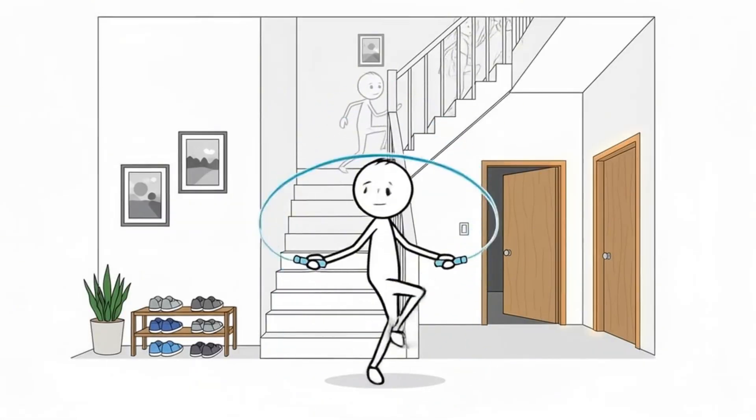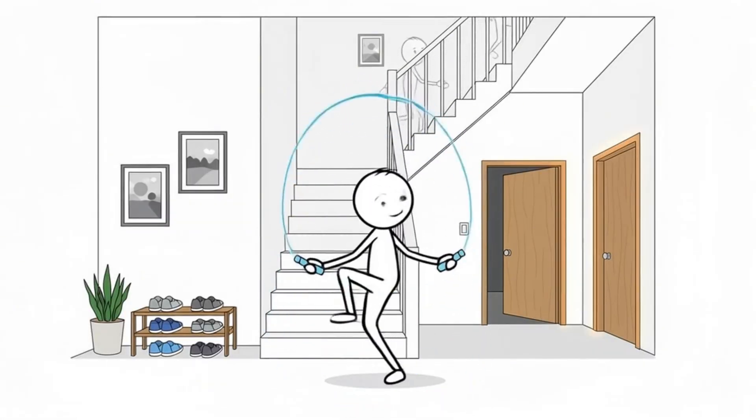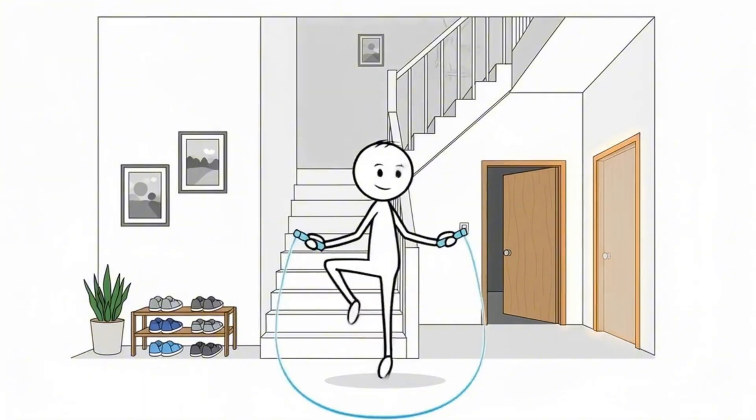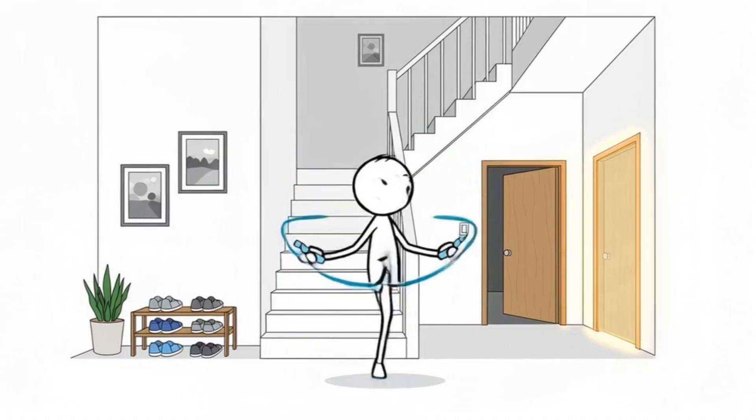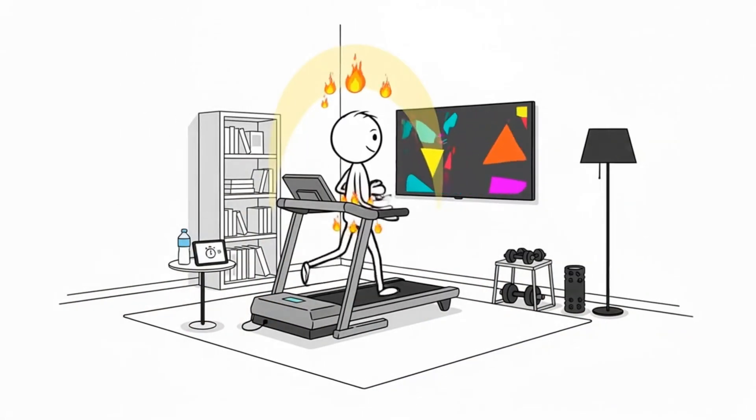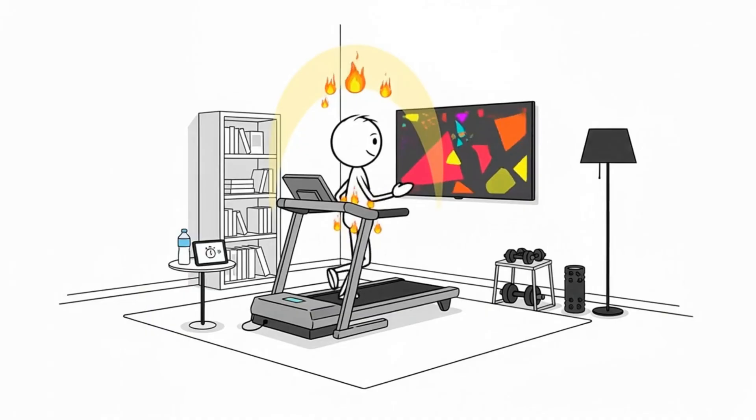strategic stair-stepping, and intentional high-knee marching. But pay close attention, because I'm saving the sixth strategy for the very end. It is a unique structural approach that solves the biggest problem with indoor cardio, boredom, while keeping your metabolism locked in the perfect fat-burning window.